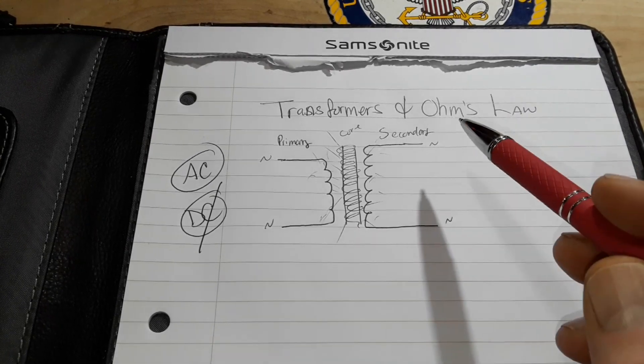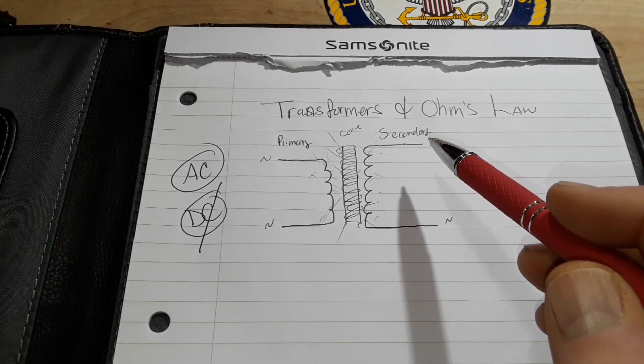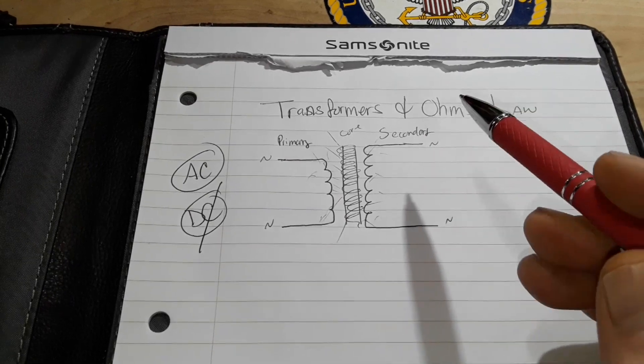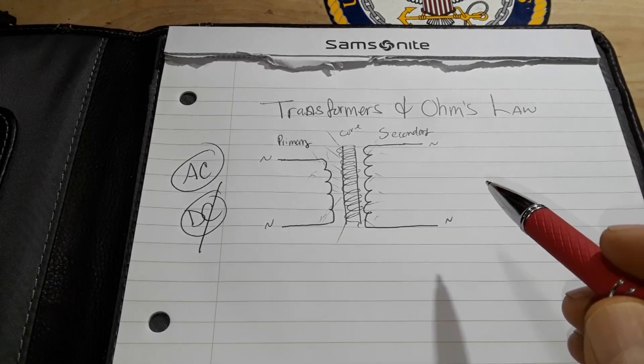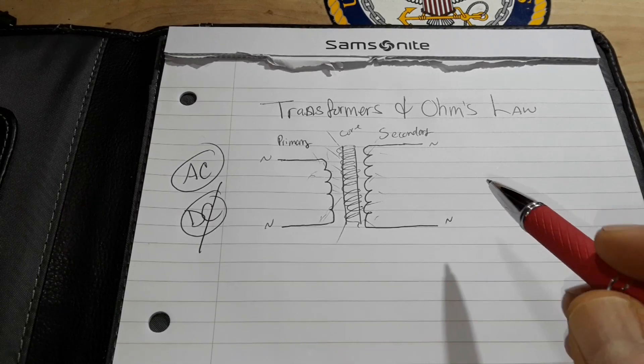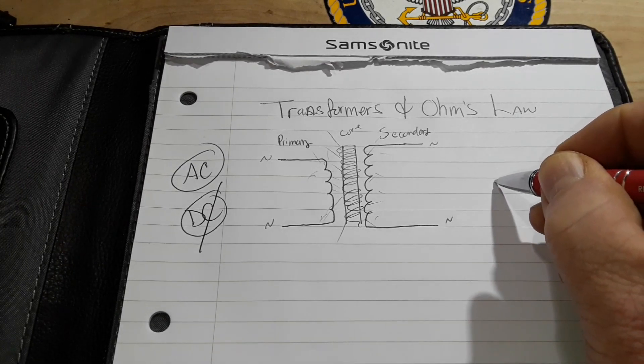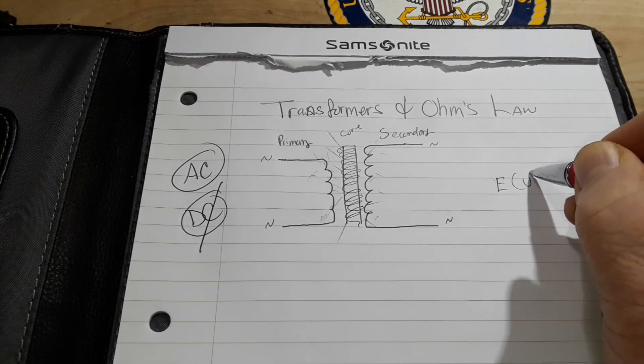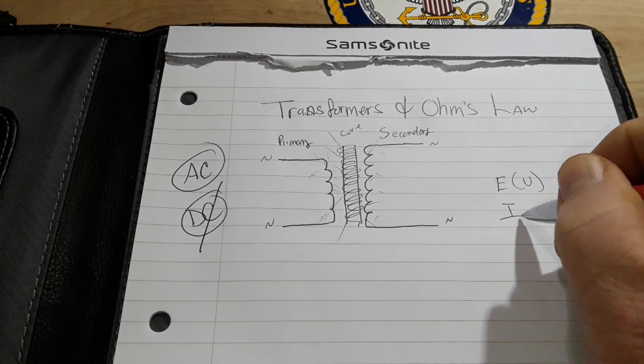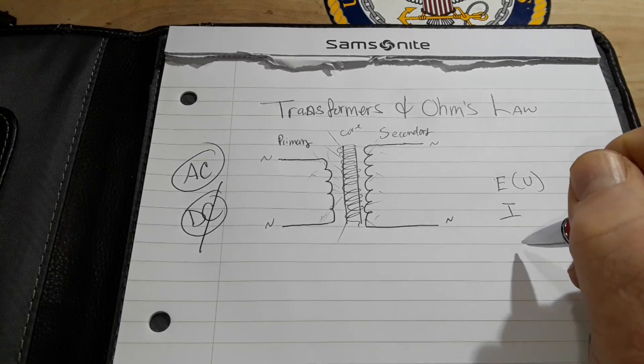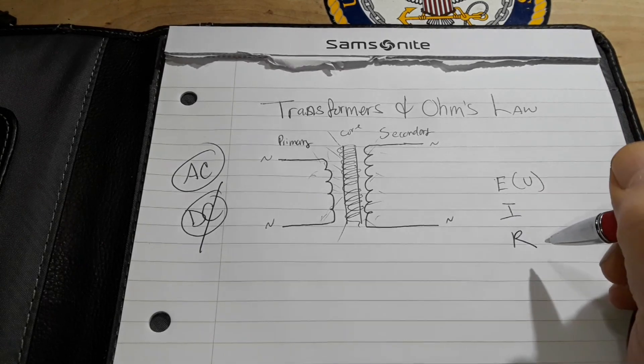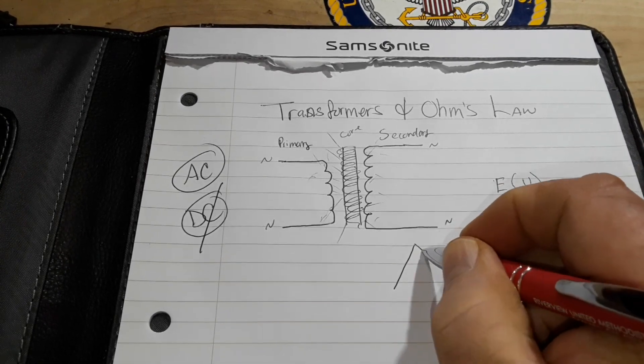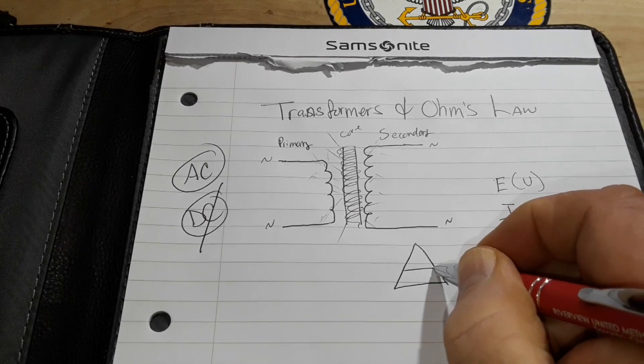Now, let's talk about how Ohm's law factors into this. Ohm's law, as you might recall, is a fundamental principle in electric circuits. I mean, it's the basis of just about everything. And it expresses the relationship between voltage, which can be labeled as E or V, current, which we call I, and resistance, which is R. So that gives us what's known as the Ohm's law triangle.